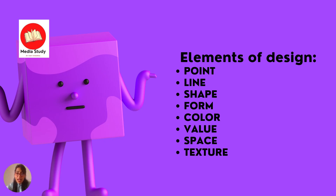Basically, there are eight types — we can say eight elements of designing. One is point, then we have line, then we have shape, then we have form. Another four are color, value, space, and texture. So in total, we are having eight elements of design.